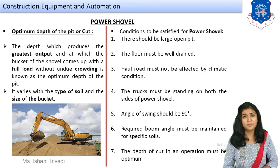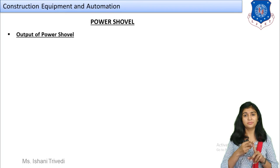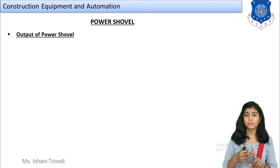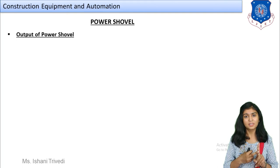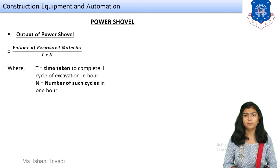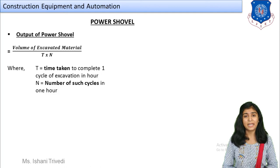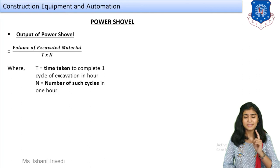For all equipment, we study: definition and concept, cross-sectional diagram and parts, and performance/output with affecting factors. The output of a power shovel is calculated as: Volume of excavated material ÷ t × n, where t is the time taken to complete one cycle of excavation in hours, and n is the number of such cycles in one hour.